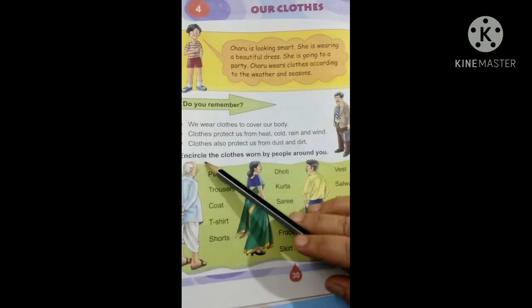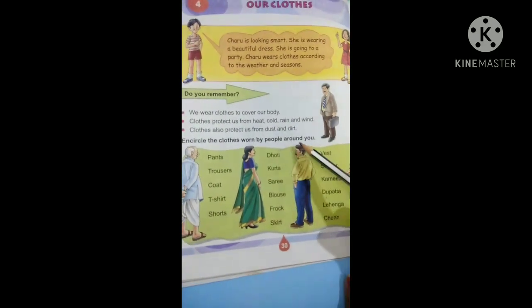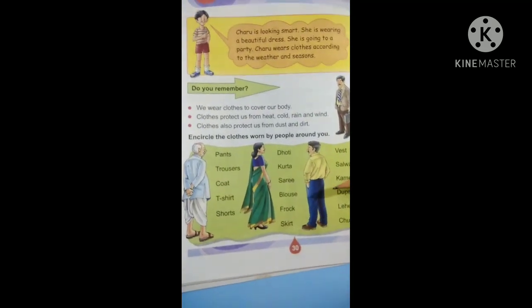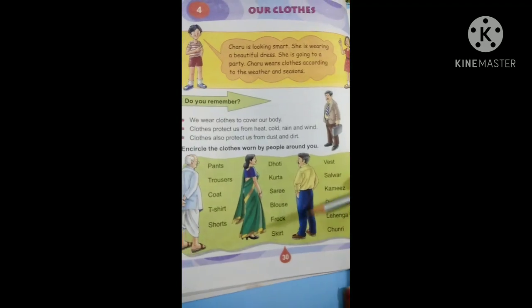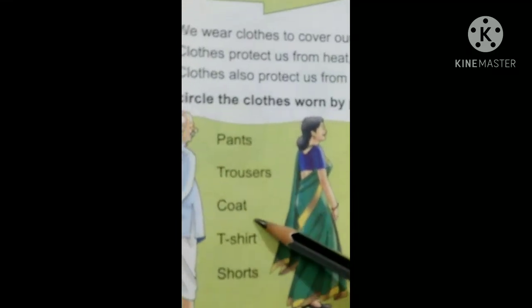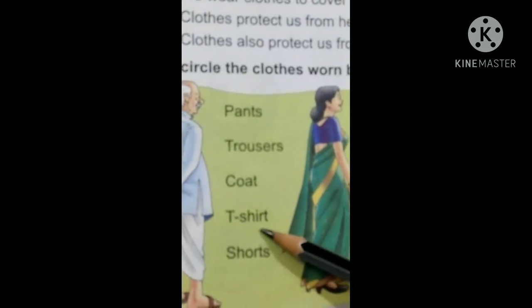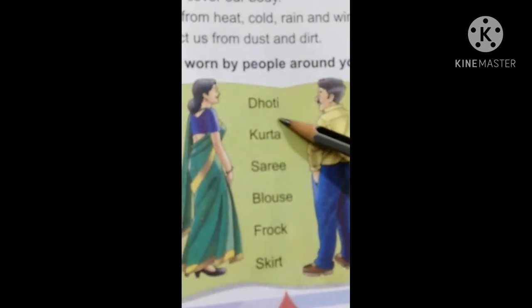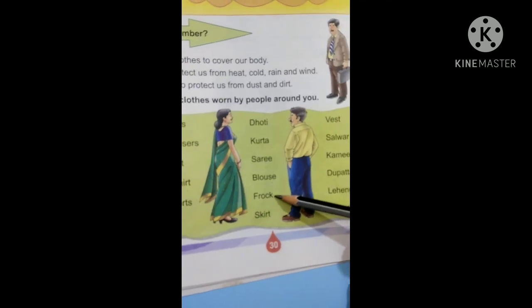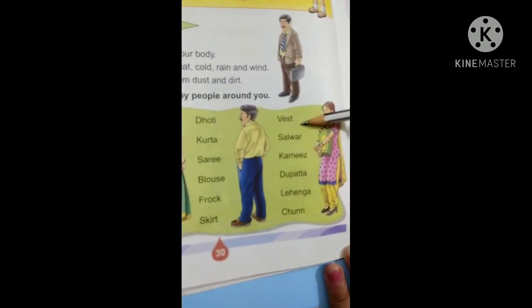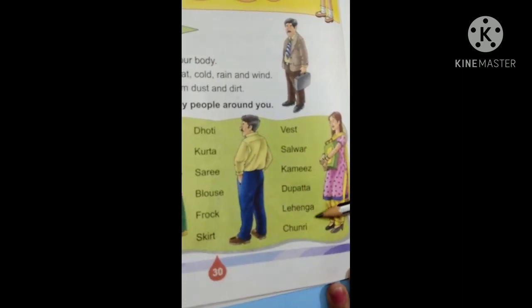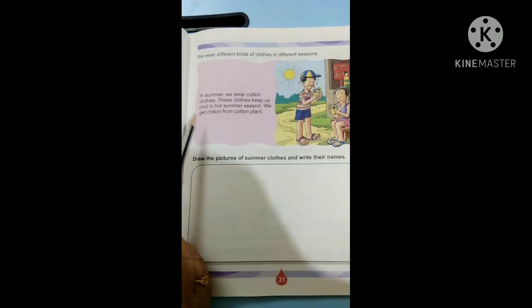Now children, we have to encircle the clothes worn by people around you. Whomever you have seen these dresses to wear, you have to just encircle them. Let me just read the words: Pants, Trousers, Coat, T-shirt, Shorts, Dhoti, Kurta, Sari, Blouse, Frock, Skirt, Waist coat, Salwar Kameez, Dupatta, Lehenga, Chunri. Come to the next page.